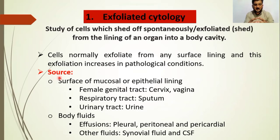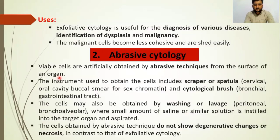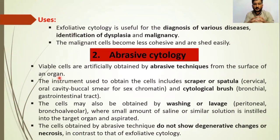Sources of exfoliative cytology include the female genital tract, respiratory tract, and urinary tract. The second source of exfoliative cytology is body fluids and effusions, like pleural, peritoneal, pericardial, synovial, and cerebrospinal fluids. Exfoliative cytology is used for diagnosis of various diseases, identification of dysplasia and malignancy. Malignant cells become less cohesive and are shed easily.